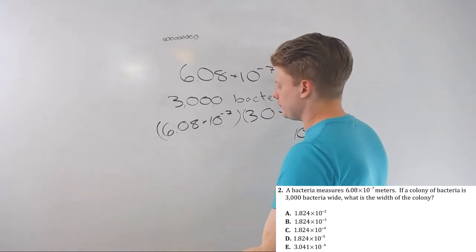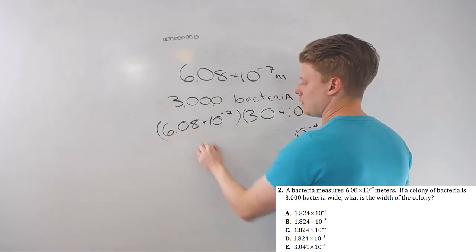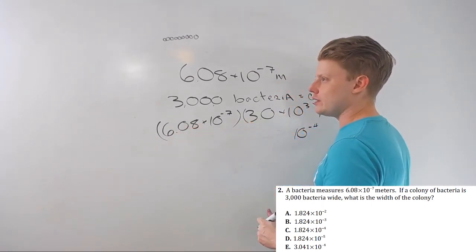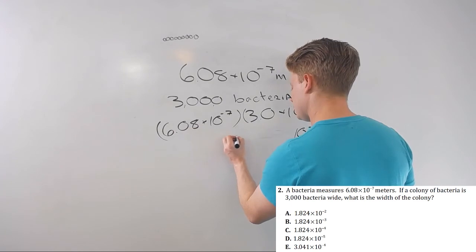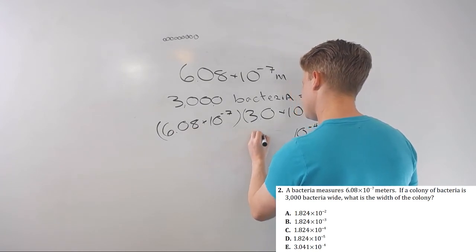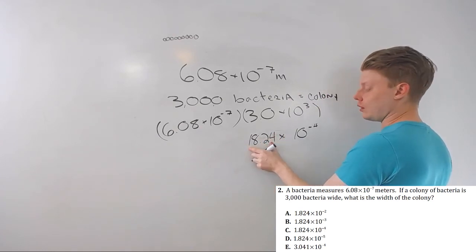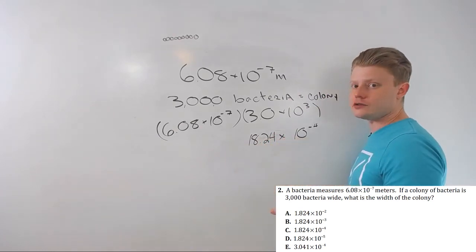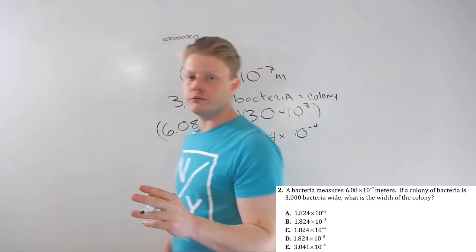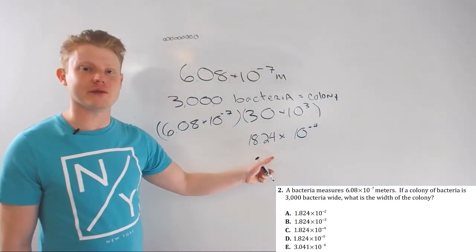Now, for the numeric part, three times 6.08 will be 18.24. So, 18.24 times 10 to the negative fourth is our answer, but it's not in scientific notation, right?